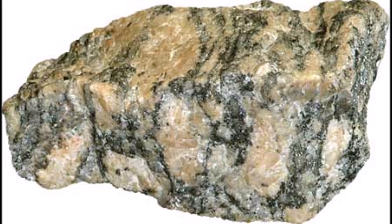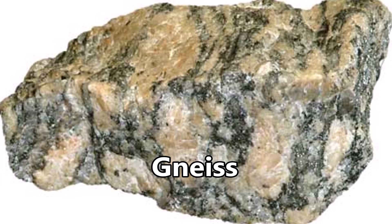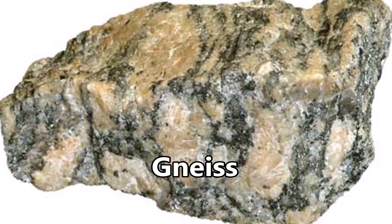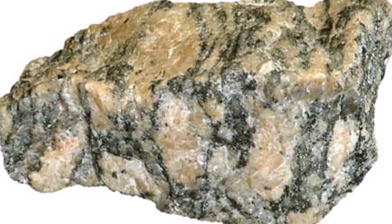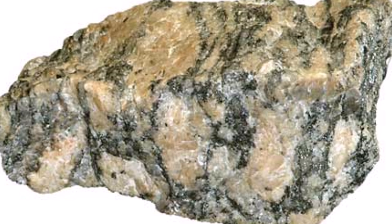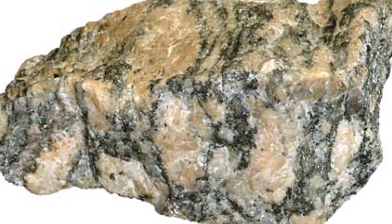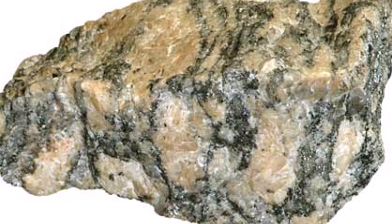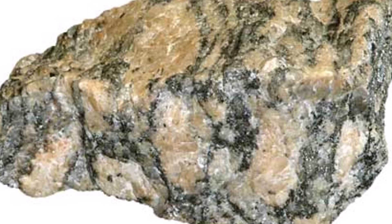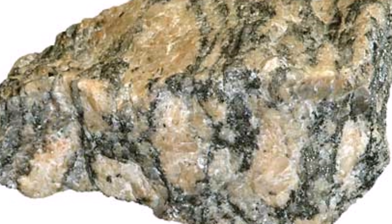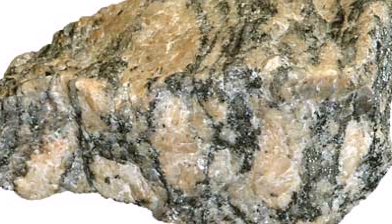Gneiss is a rock of great variety with large mineral grains arranged in wide bands. It describes a type of rock texture, not a composition. This type of metamorphic rock was created by regional metamorphism in which a sedimentary or igneous rock has been deeply buried and subjected to high temperatures and pressures.